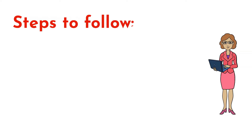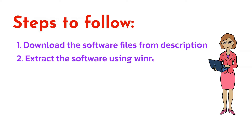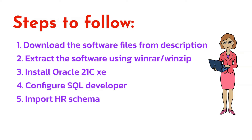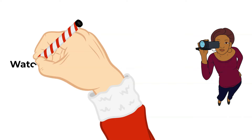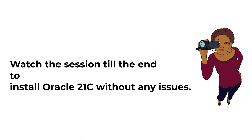These are all the steps we have to follow for the complete installation. First step: download the software, which I have given in the description link. Second step: extract the software using WinRAR or WinZip. Third step: install Oracle 21c database. Once installed, configure SQL Developer and import HR Schema. I have given all the queries and commands in the description, so just copy and follow. Watch the session till the end to install Oracle 21c completely without any issues.